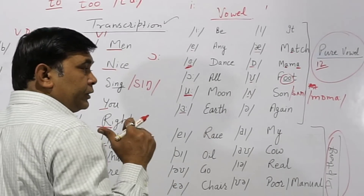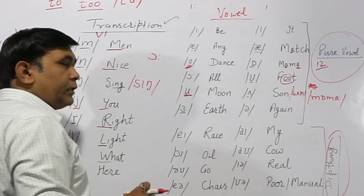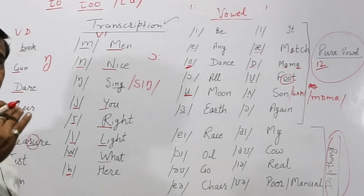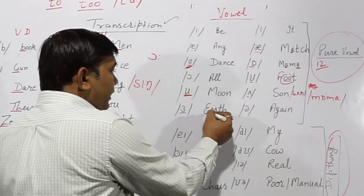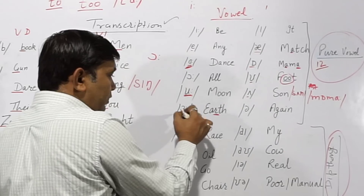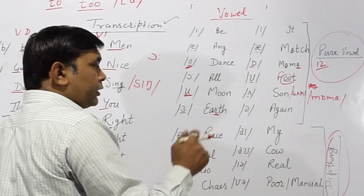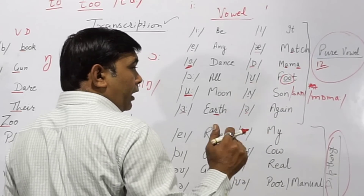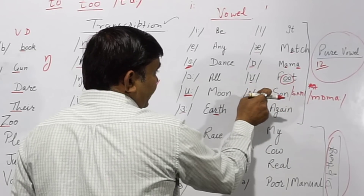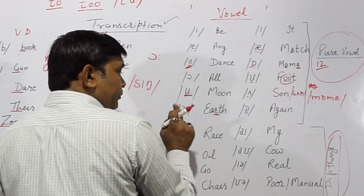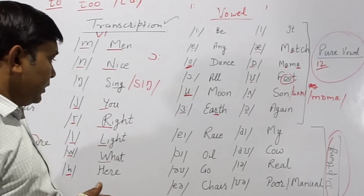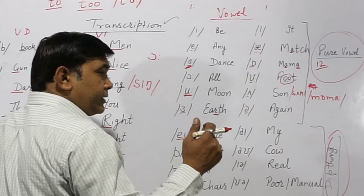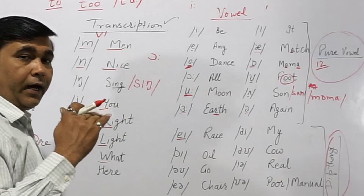Next is /ʌ/ — small o — as in 'sun'. Then the long /ɜː/ sound — as in 'earth'. We don't pronounce it 'errth'; the r is not pronounced and is replaced by the long /ɜː/ sound — 'earth'. And /ə/ — the schwa — small o again — as in 'again', 'again'. This 'a' is longer than one and shorter than another.